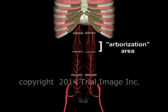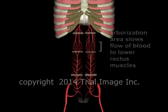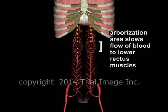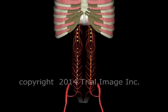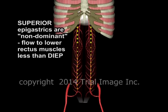There is an arborization area of blood vessels between the superior and inferior epigastric arteries. In the area of arborization, the blood vessels become very small. This greatly reduces the blood flow beyond the point of arborization. As a result, the superior epigastric arteries supply the non-dominant blood flow to the lower rectus muscles.